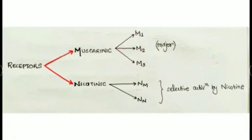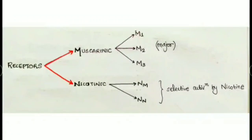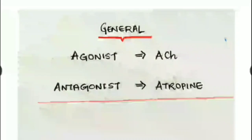Regarding the cholinergic system, there are chiefly two types of receptors. The first is the muscarinic receptors, with subtypes M1, M2, and M3 as the major subtypes. The next set of receptors are nicotinic receptors, with NM receptors and NN receptors, with selective activation by nicotine.